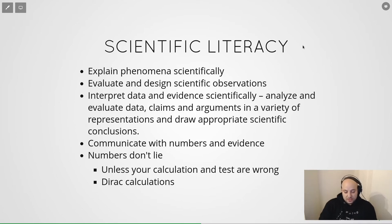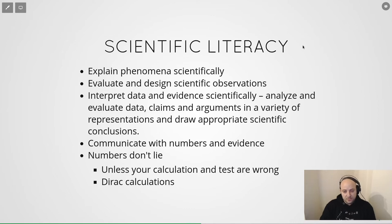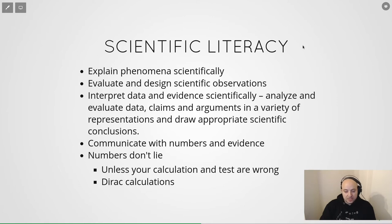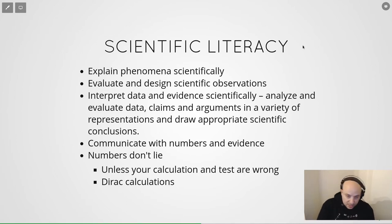That brings us to scientific literacy. As an engineer, we need to be able to explain a phenomenon scientifically. For example, as a software engineer, when something goes wrong we should describe the problem scientifically. We need to evaluate and design scientific observations, interpret data from experiments, collect evidence, analyze data, and reach conclusions. We must be able to communicate with evidence and numbers — and if we have the right experiment and correct tests, numbers don't lie.